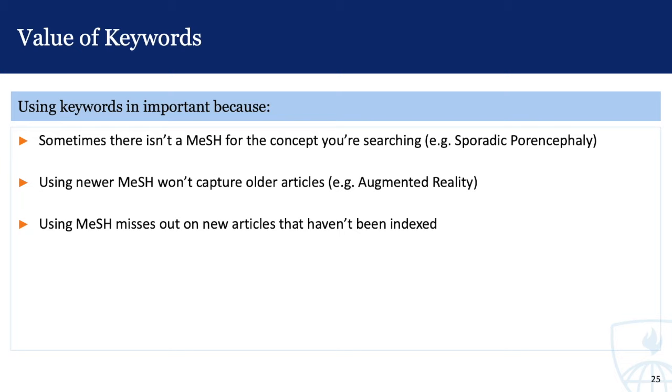Also, new MeSH gets added every year. If you're using one of these newer headings, like augmented reality, which was added to the MeSH database in 2019, you'll miss older articles that were indexed under another heading. Furthermore, it can take several months for Medline to index new articles. If you only search with MeSH, you might miss the most recent literature on your topic. For these three reasons, if your goal is to be thorough, you'll want to search using a combination of MeSH and keywords.